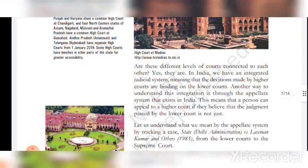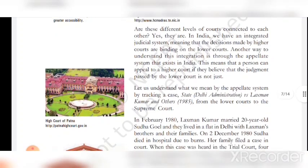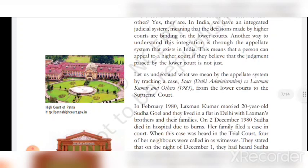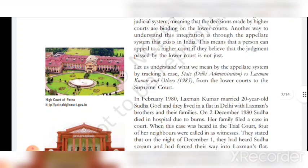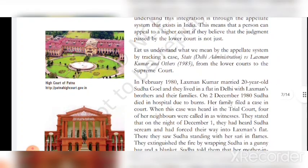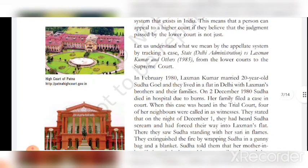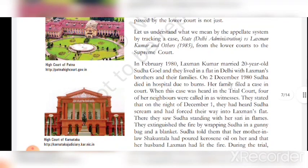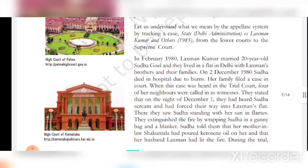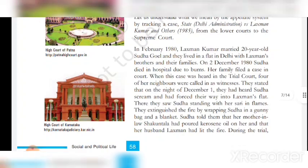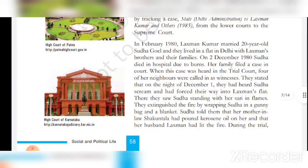Are these different levels of courts connected to each other? Yes, they are. In India, we have an integrated judicial system, meaning that the decisions made by higher courts are binding on the lower courts. Another way to understand this integration is through the appellate system that exists in India. This means that a person can appeal to a higher court if they believe that the judgment passed by the lower court is not just. Let us understand what we mean by the appellate system by tracking a case — State Delhi Administration versus Lakshman Kumar and others, 1985 — from the lower courts to the Supreme Court.